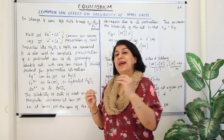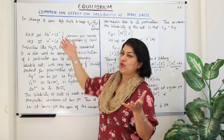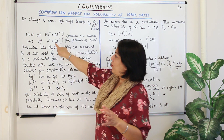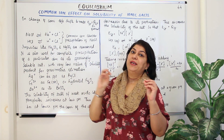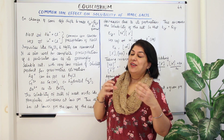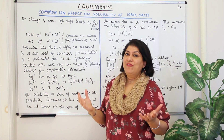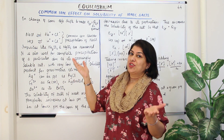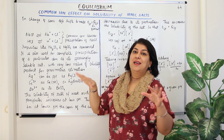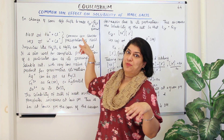Whenever you add a common ion, the equilibrium of the particular salt is disturbed. Why? Because one of the products is the common ion, due to which the concentration of the common ion increases, and therefore the equilibrium constant Ksp now becomes Qsp.